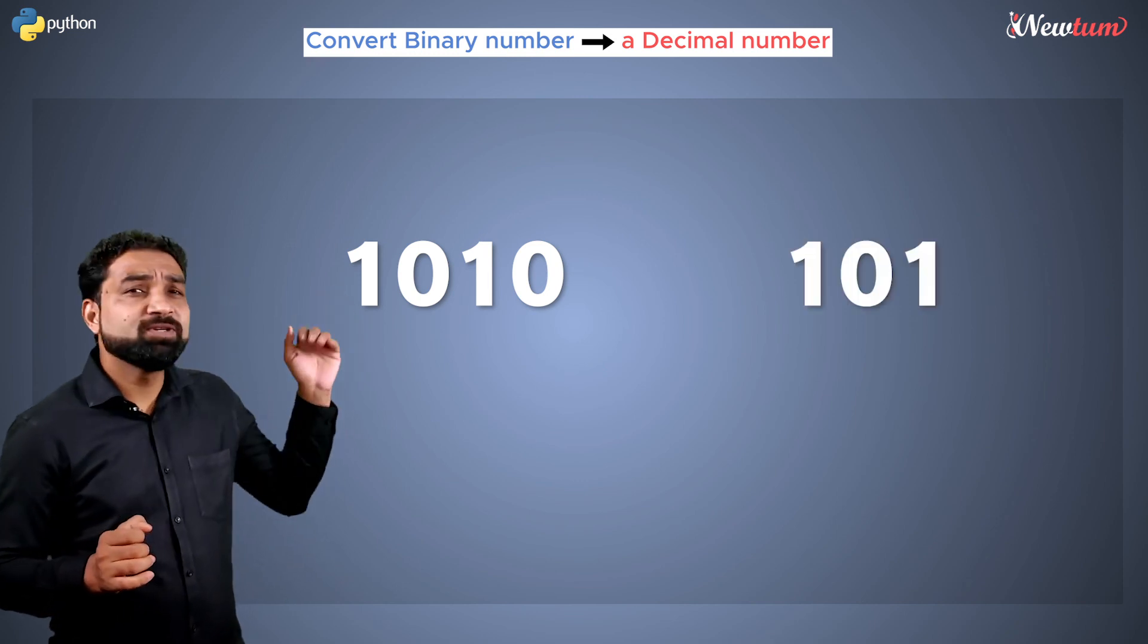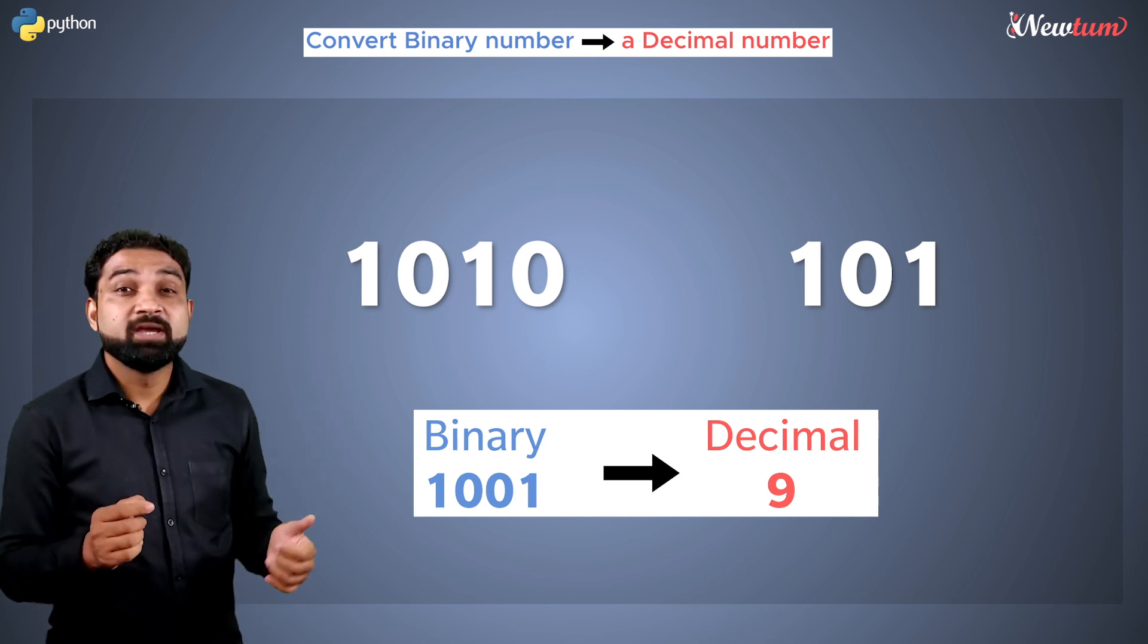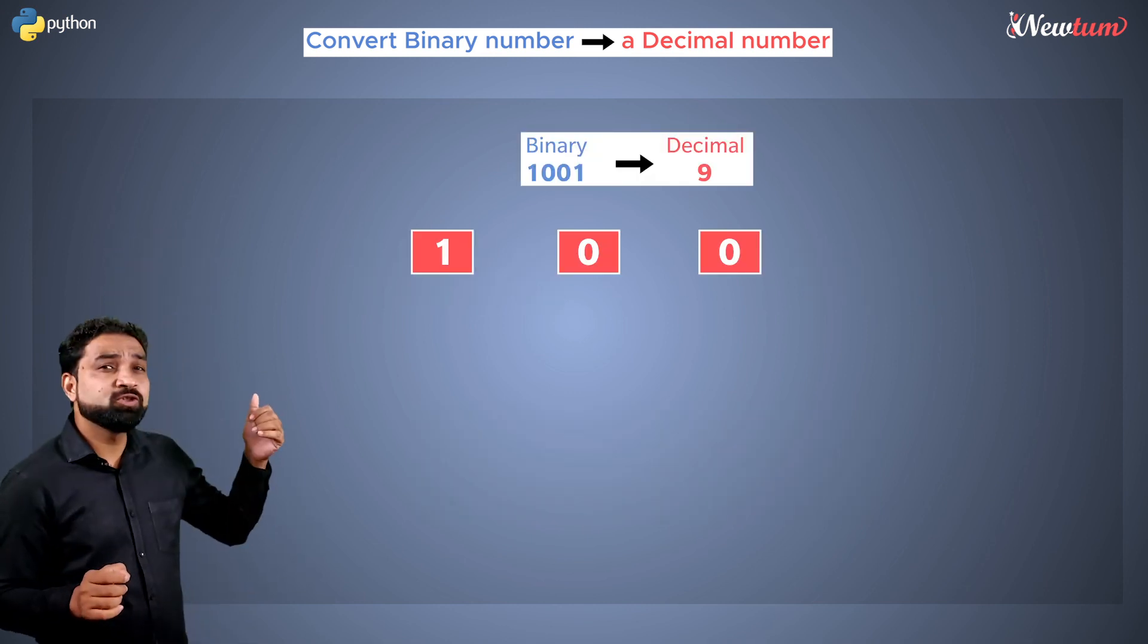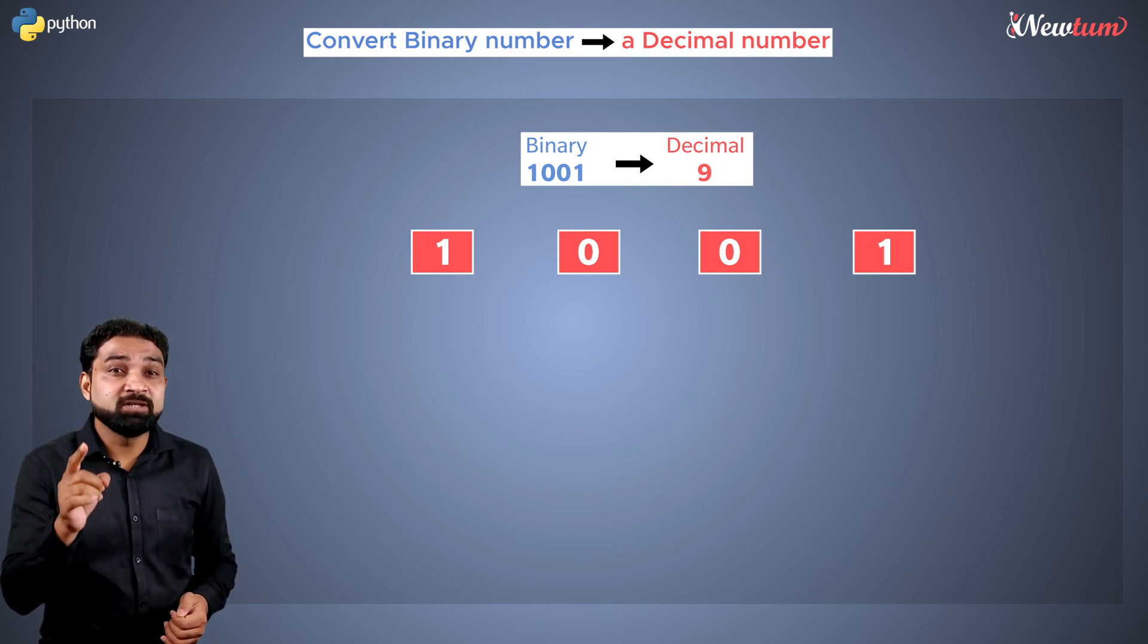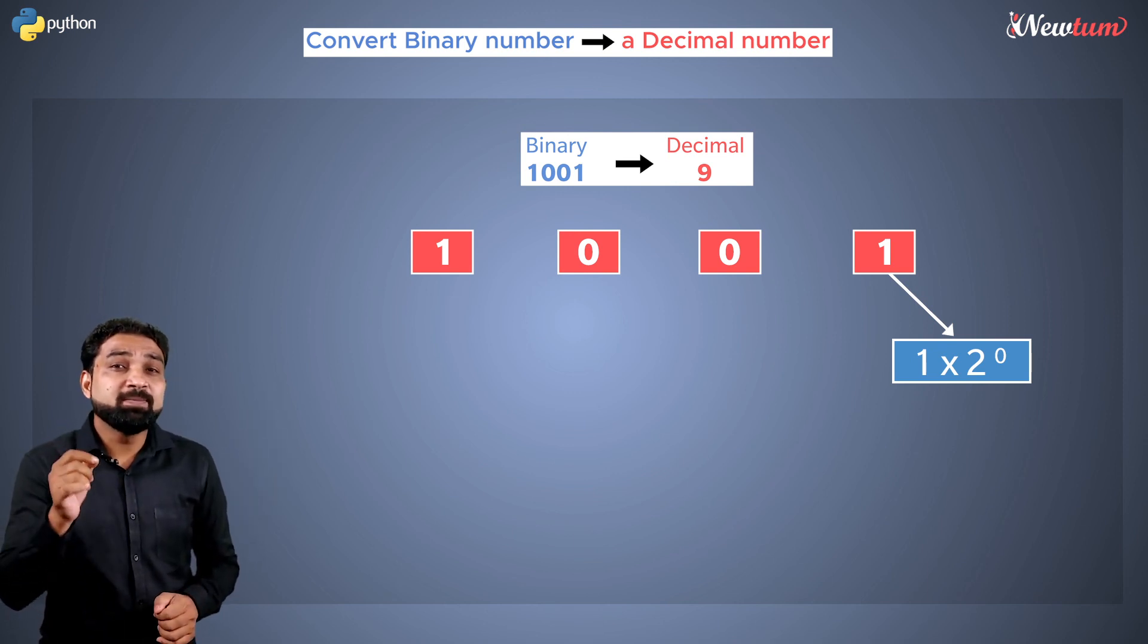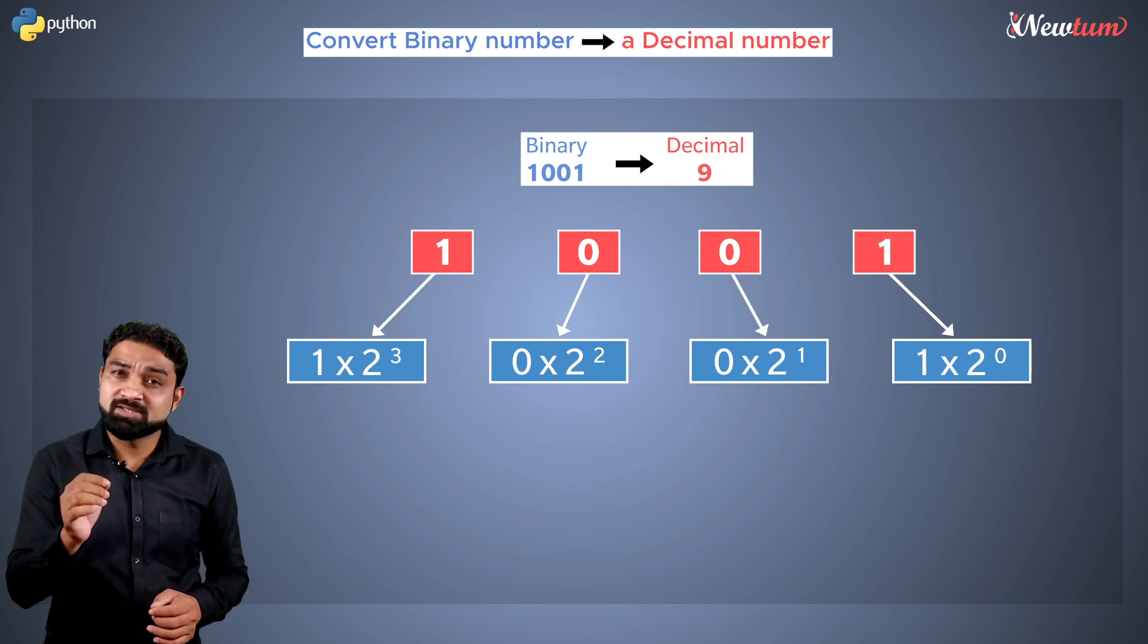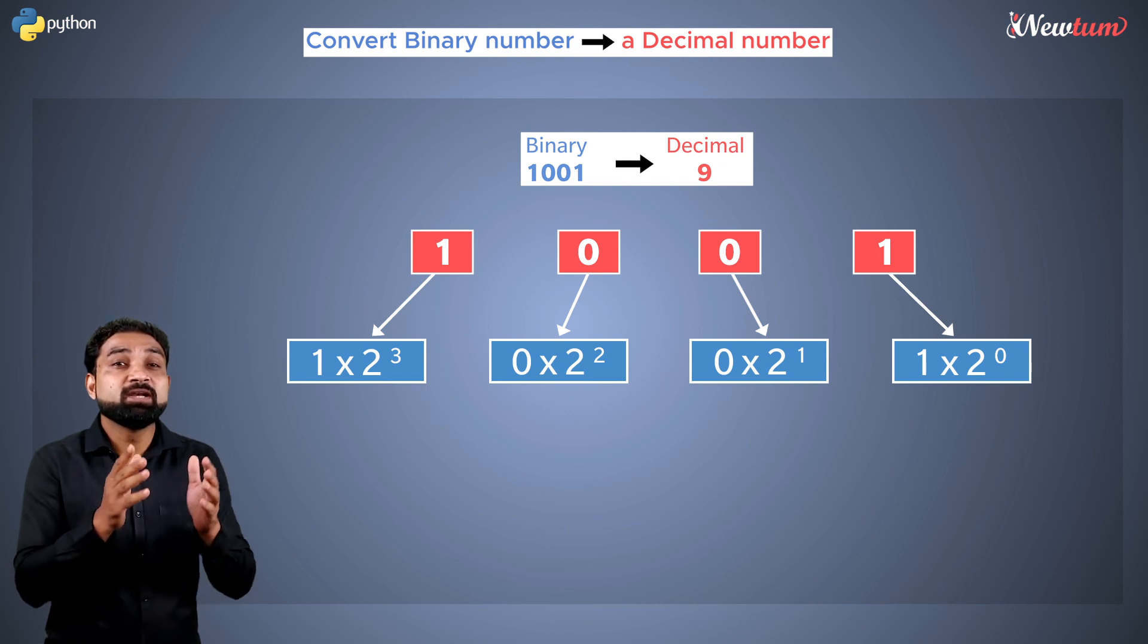1010 or 101 are binary numbers. When you write 1001, it's 9 in decimal. But how? The formula is pretty simple. If you look at 1001, it has 4 digits. Hence, we will multiply the last digit by 2 to the power 0. Then we will multiply the second last digit by 2 to the power 1 and so on for all the digits, increasing the exponential by 1 every time as we move to the left side.